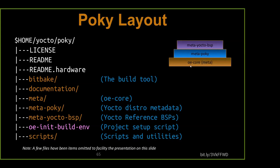Generally there's between one and three kernel recipes per release of the Yocto project. For long-term stable versions, there's generally one — Dunfell used 5.4, Kirkstone uses 5.15, with only one kernel. The other non-LTS releases every six months are generally between two and three. Those recipes exist in meta, with modifications in meta-poky through configuration or appends, and likely also through configuration changes in the BSP depending on what machine you choose to build for.